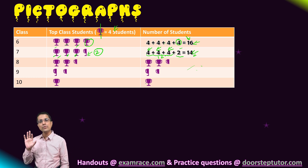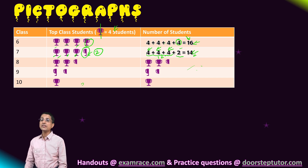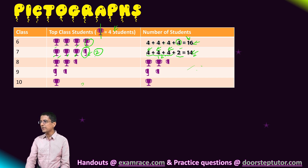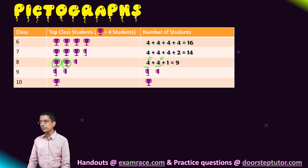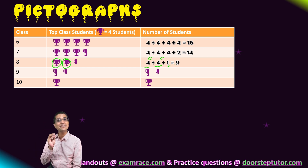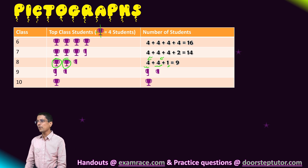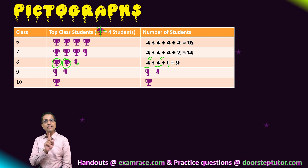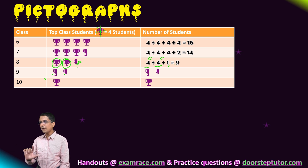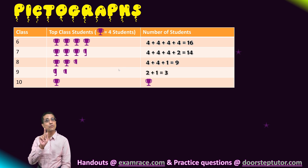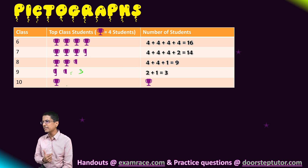We need to create additional symbols for representing partial values. The next value is 9, which is 4+4+1. The two fours are represented by two complete trophy symbols. For the remaining 1, I cut the trophy into quarters and draw one-quarter of a trophy to represent 1. So 9 is represented by two full trophies and one quarter-trophy. A half trophy represents 2, a quarter trophy represents 1.